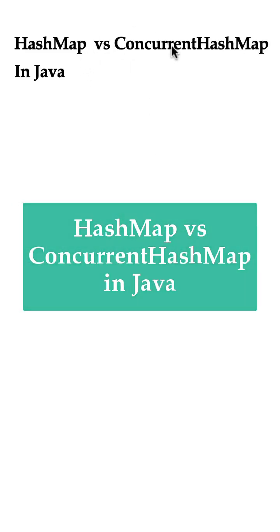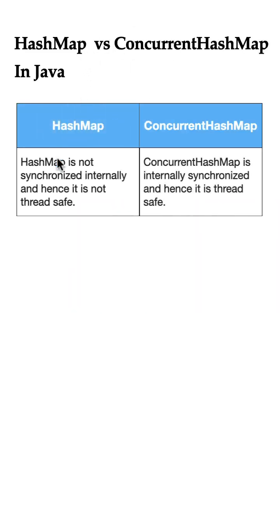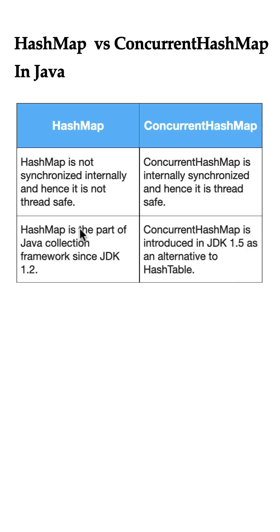What is the difference between HashMap and ConcurrentHashMap in Java? HashMap is not synchronized internally and hence it is not thread-safe, whereas ConcurrentHashMap is internally synchronized and hence it is thread-safe. Next, HashMap is part of the Java Collections Framework since JDK 1.2.